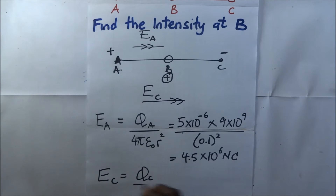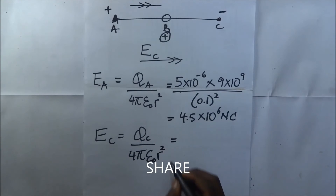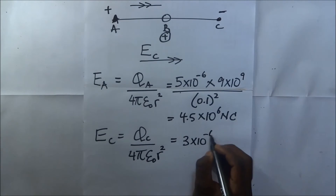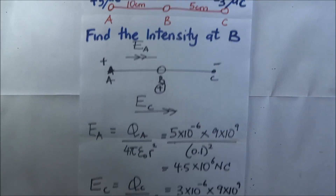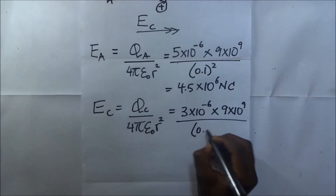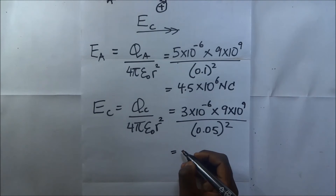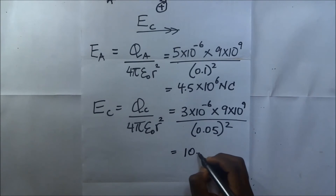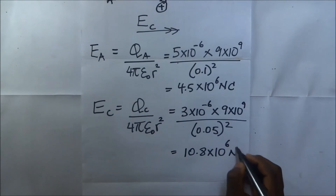The intensity due to C is: E_C equals Q_C over four pi epsilon naught times r squared. Q_C is three microcoulombs — three times ten to the negative six — multiplied by nine times ten to the power nine, divided by the distance between them, which is five centimetres or 0.05 metres, so r squared is 0.05 squared. Our answer for intensity due to C is 10.8 times ten to the power six newtons per coulomb.